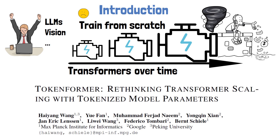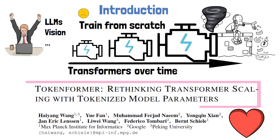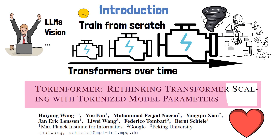Every so often I come across a paper that's simply beautiful, and that's the case here. Today's paper is titled 'Tokenformer: Rethinking Transformer Scaling with Tokenized Model Parameters,' and it suggests a fascinating change to the transformer architecture which eliminates the need to retrain the model from scratch when increasing model size, saving a dramatic part of the cost. The new architecture is named Tokenformer.